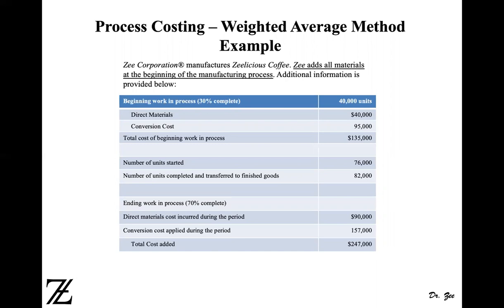So here we have a beginning work in process which is 30% complete with 40,000 units. The cost information is provided below. During the period, you started 76,000 units and completed 82,000 units. The ending work in process is 70% completed. Units are not provided, so you need to back-solve to calculate the ending work in process units. Direct material costs and conversion costs incurred during the period are also provided.